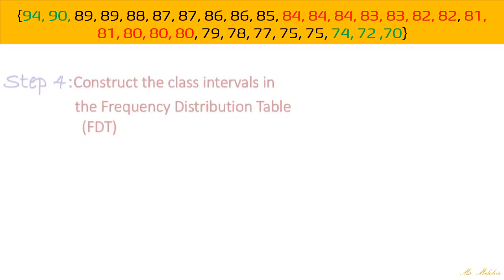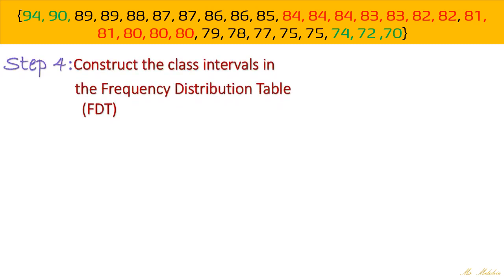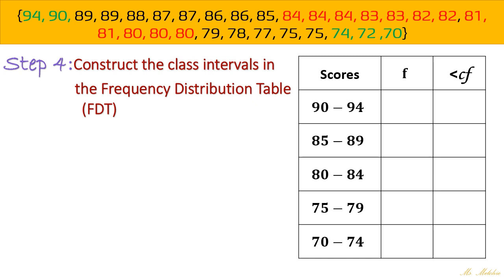Okay, so for our next step, we have construct the class intervals in the frequency distribution table. So here, how are we going to make the class intervals? So first of all, you need to look at your lowest core or lowest data or lowest number given. So since we were able to arrange this one already, our lowest number is 70. So with that, this will be your starting point in making the class intervals. So we have, so here we have 70.